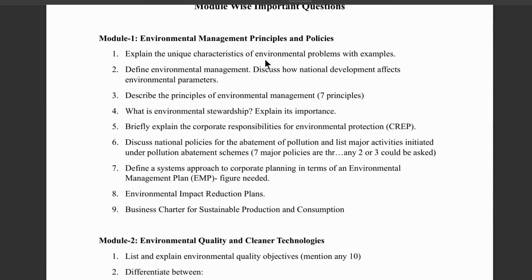We'll discuss one by one questions. The first question is about the unique characteristics of environmental problems with examples. Here it could be asked for 10 marks. We have to define all the problems like population growth, waste production, climate change — there are nearly 10 to 15 problems. So, just explain all those. If it's a 10-mark question, you have to write minimum 10 points and if possible, write at least 12 to 15 points.